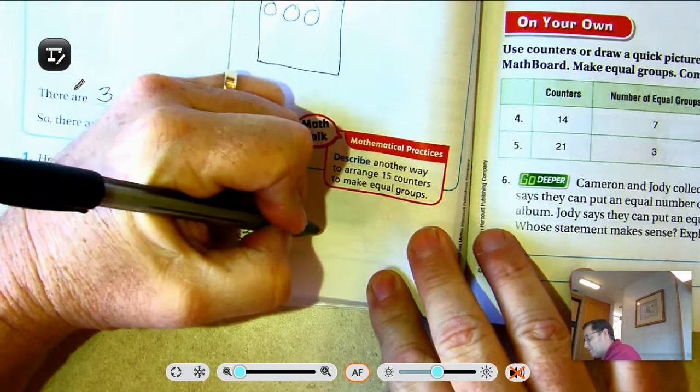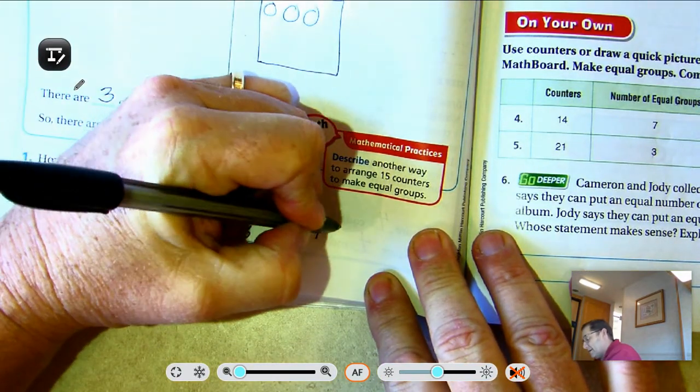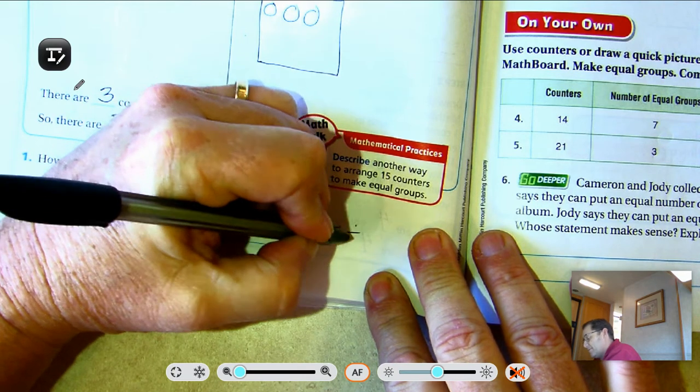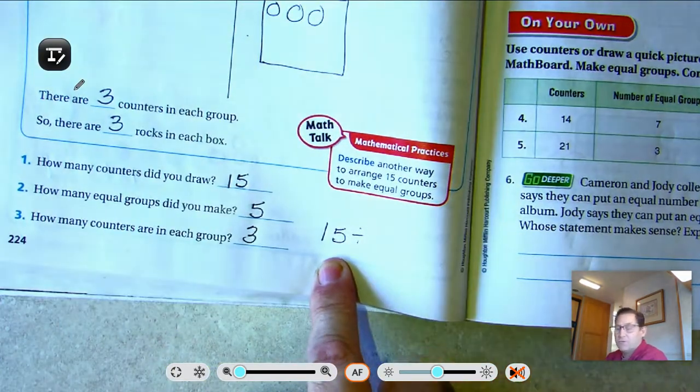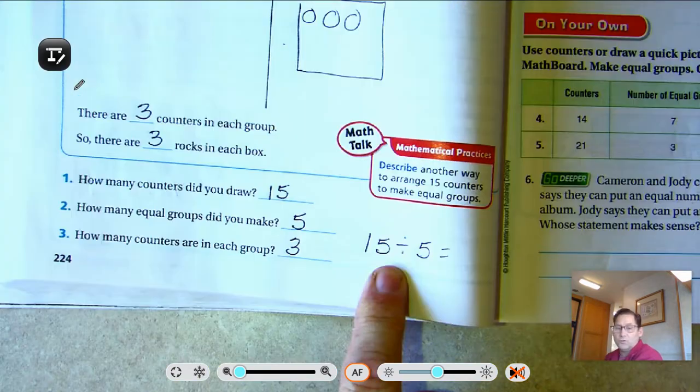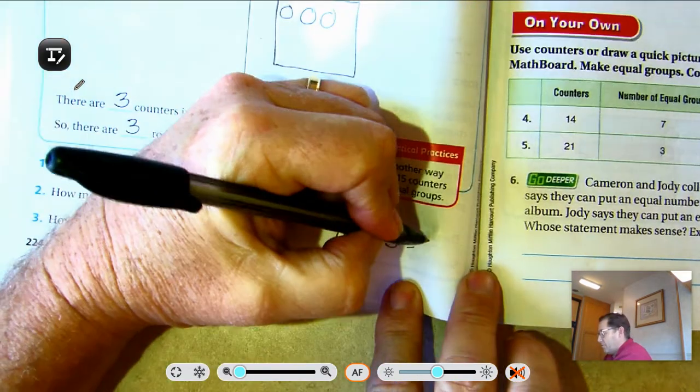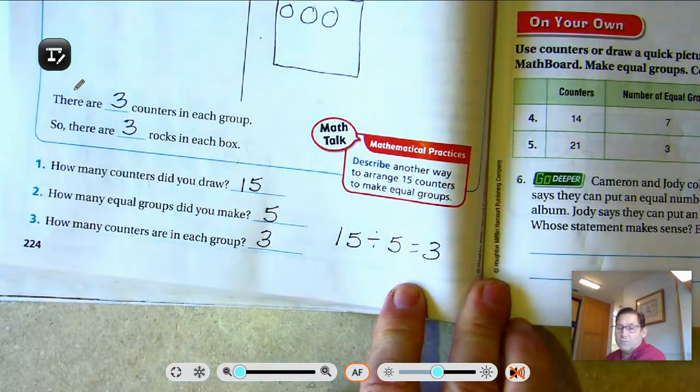Okay, that seems straightforward. So the division problem for that one, if we wanted to just write a division problem, it would be 15, the total number of rocks, shared with 5 equal groups. And we would put 3 into each equal group.